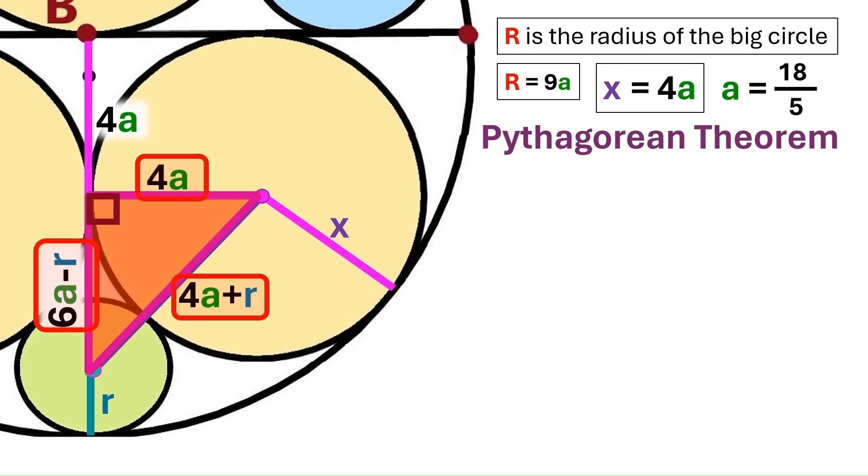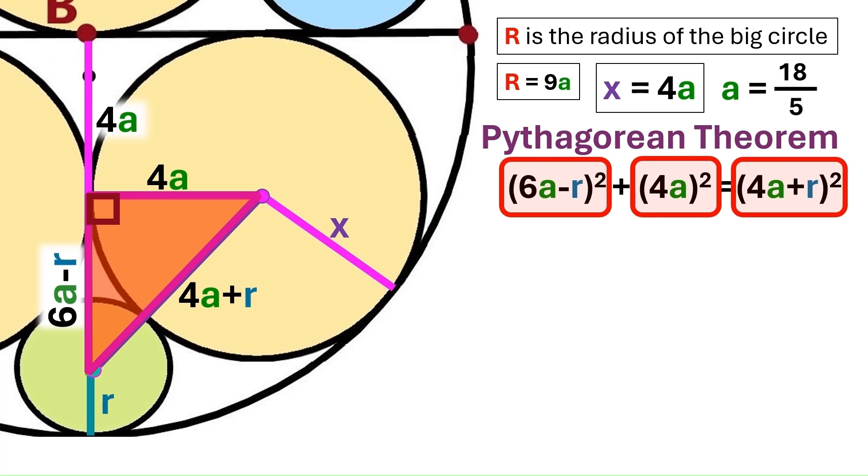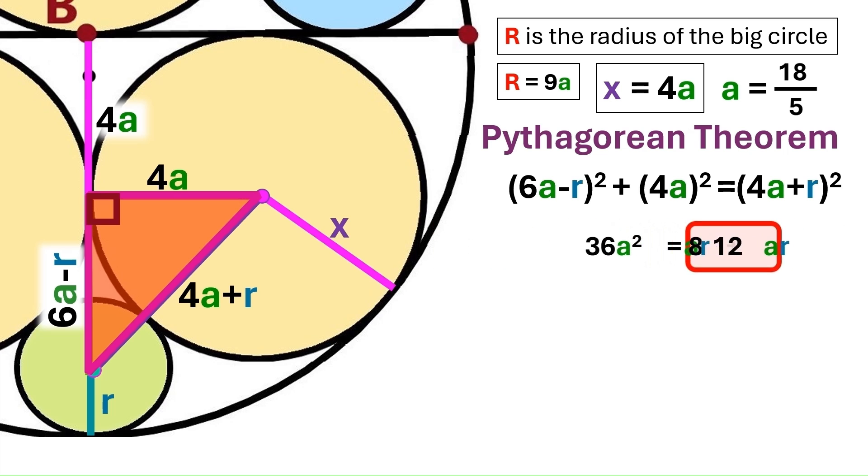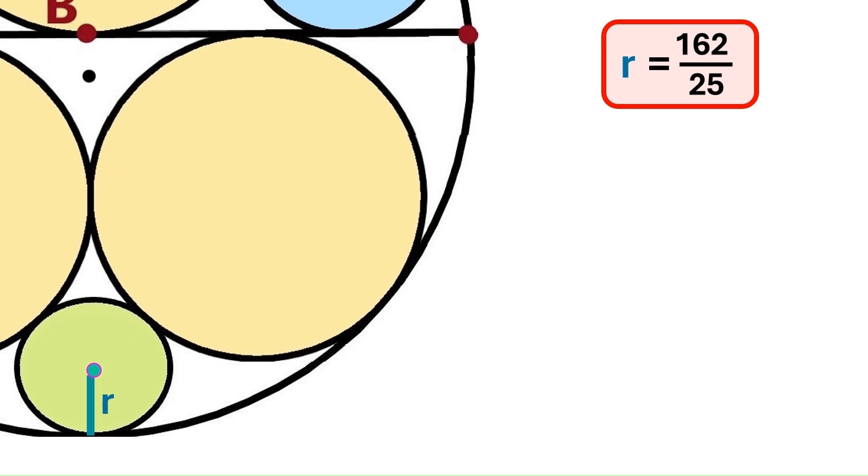Let's take the sides of the triangle and put them into this equation. We open up all the brackets to get this. Identical stuff on both sides cancel out. And we take this minus 12ar to this side where it becomes plus. We add these two and we get 20ar. And after dividing both sides by 4a, we find that 9a equals 5r. And a is actually 18 over 5. So let's replace this a with that. And it turns out r is 162 over 25. Weird fraction. But we'll handle it.